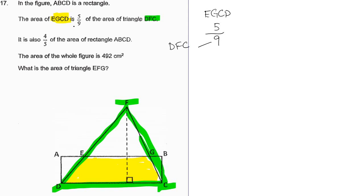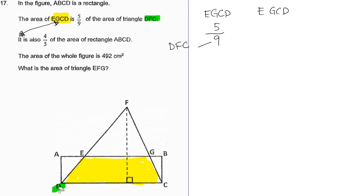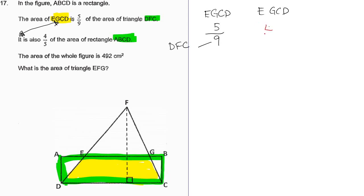My second clue is that it — referring to EGCD — is also 4 over 5 of the area of ABCD. So now I'm comparing EGCD to ABCD. It is also 4 over 5 of this portion here, ABCD. Which means if I cut ABCD into 5 portions, the area of EGCD equals 4 over 5. So I have another thing here: 4 over 5 of the total area of ABCD.